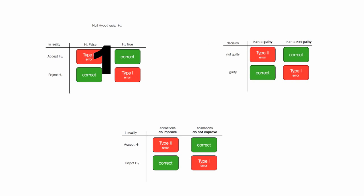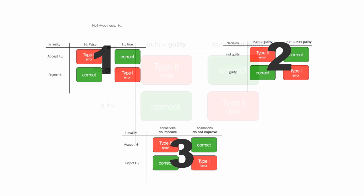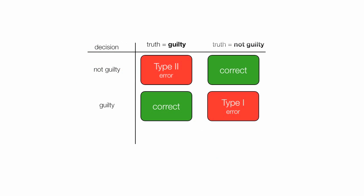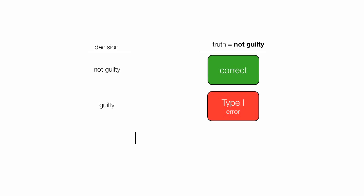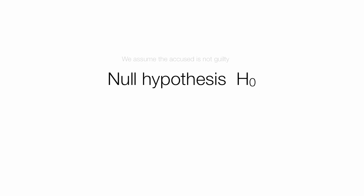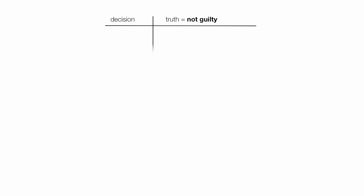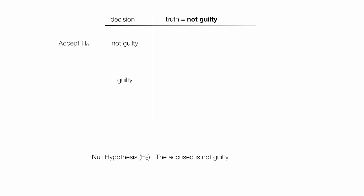I'm going to use three different examples. This table here, I'm going to look at it column by column first — truth is equal to guilty, and then truth is equal to not guilty. The null hypothesis would be something like: we assume the accused is not guilty, with emphasis on 'not guilty.' I'm going to build this table one column at a time — the decision column and the truth column. The decision is either not guilty or guilty.